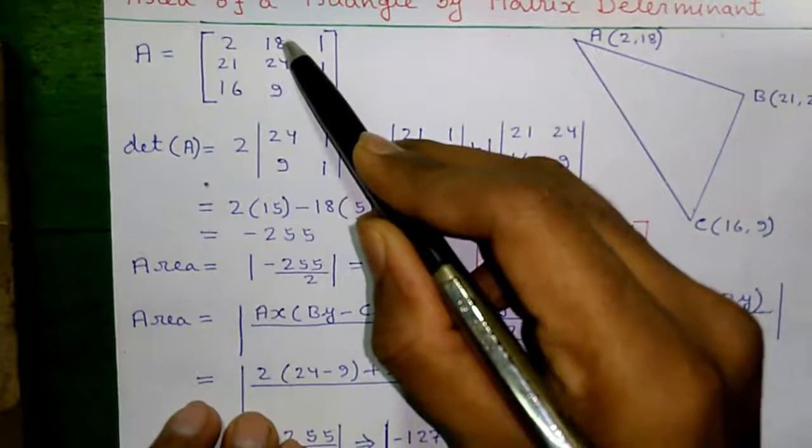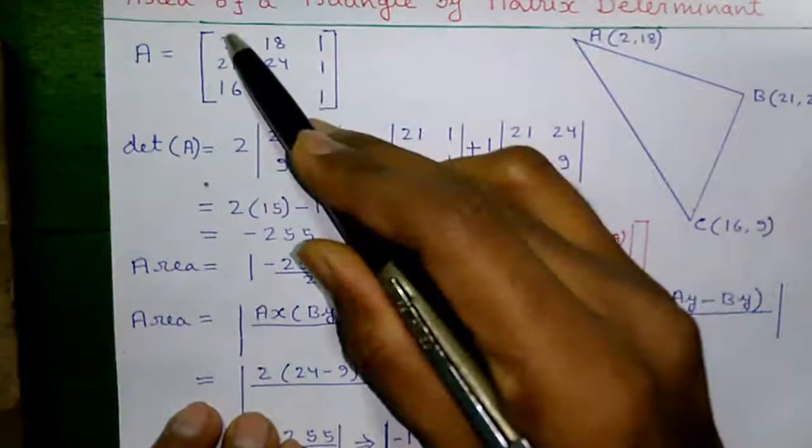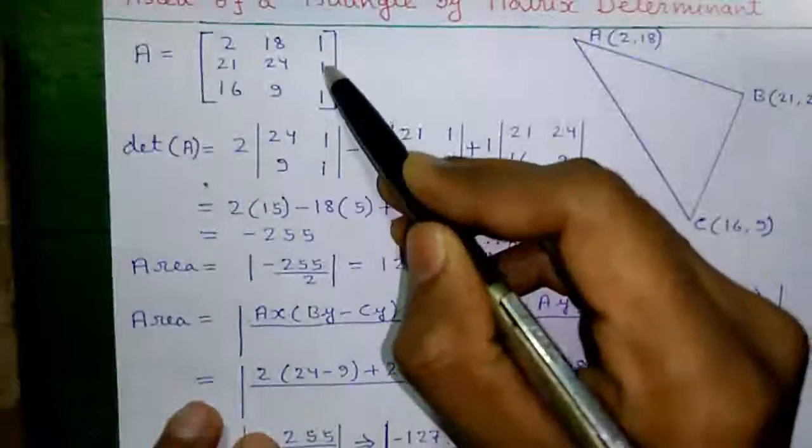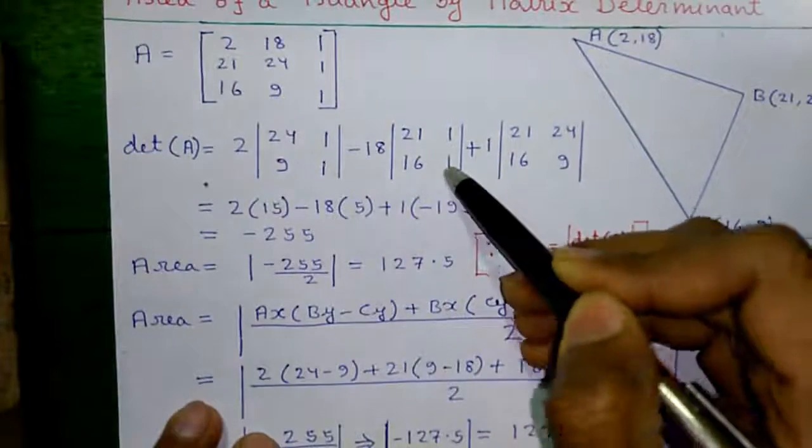Minus second element, which is 18 into hide row 1 and column 2. We are left with 21, 16, 1 and 1.